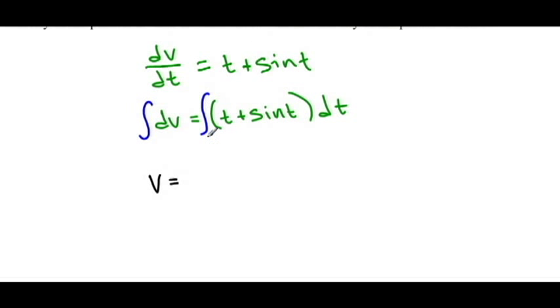The antiderivative of t + sin(t), this is (1/2)t² - cos(t) + c.